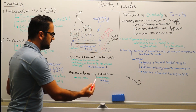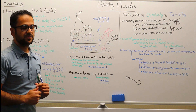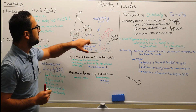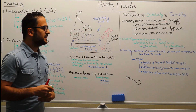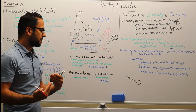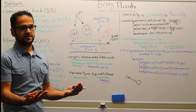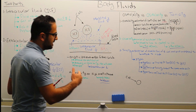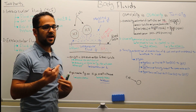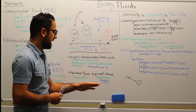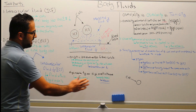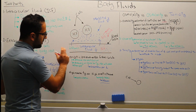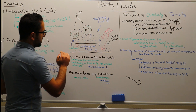Let's take an example to understand how water actually moves from the intravascular fluid to the interstitial fluid. In a disease state — say somebody comes in with cirrhosis, which is liver damage — knowing that albumin is made in the liver, when someone has liver damage, albumin is not being made. So if we don't have albumin in the intravascular fluid, that means there is a low amount of albumin and therefore low oncotic pressure.